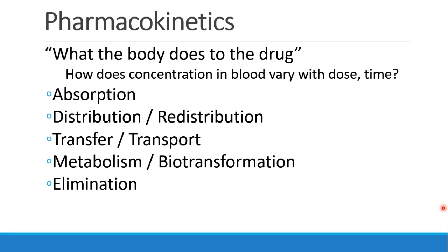Pharmacokinetics is simply what the body does to the drug — how does the concentration in the blood vary with the dose that you give, or with the time that's elapsed since you gave the dose? Pharmacokinetics has many different steps: it starts with absorption of the drug into the body, then the drug is distributed and redistributed to different tissues. It has to be transferred or transported to the site of action. Once the drug has had its action, it undergoes metabolism or biotransformation, and finally, elimination from the body.